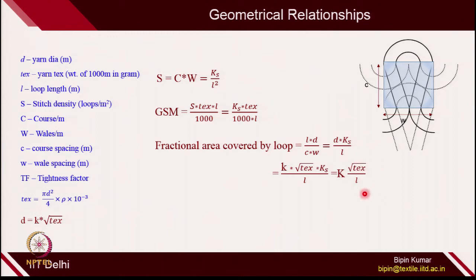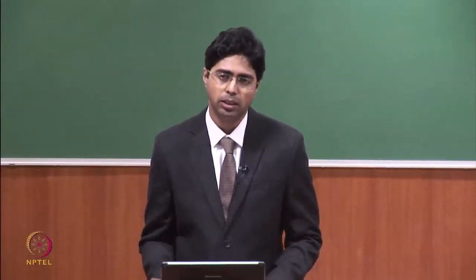The tightness factor √Tex/L means that if this value is larger, the fabric automatically becomes very tight and less area is available for air inside the fabric. This affects porosity, permeability, and water permeability — everything depends on the fractional area covered by the loop, which is dependent on √Tex/L. Although this relationship started with jammed fabric, nowadays it is very useful and significant in practice, though empirical in nature.